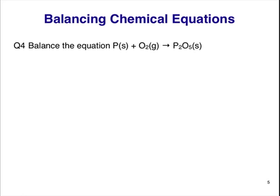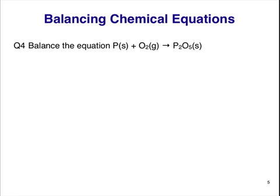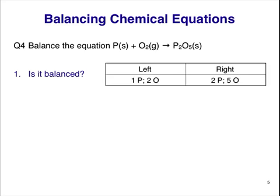Question 4. Balance the equation P plus O2 making P2O5. Stop the video here and figure out your answer. The first step is to count the number of each atom in the given equation. On the left, we have one P and two O atoms. On the right, we have two P and five O atoms. This equation is not balanced. Both P and O are unbalanced.